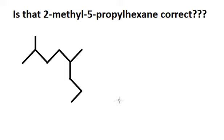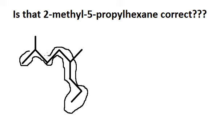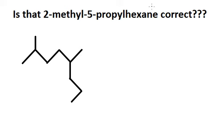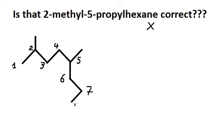Now if we look carefully at this one, we see that the long chain goes from here. That means this is not correct, so we need to find a new one. Going from this direction: 1, 2, 3, 4, 5, 6, 7, 8.